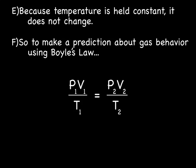Because the temperature is constant, it does not change. So for predictions about gas behavior using Boyle's Law, we're only going to deal with the pressure and volume. This time we get to ignore the temperature. So we'll be using P1 times V1 equals P2 times V2.